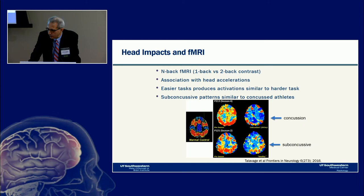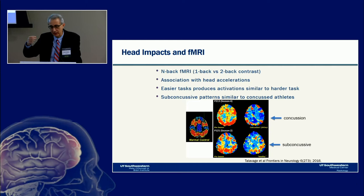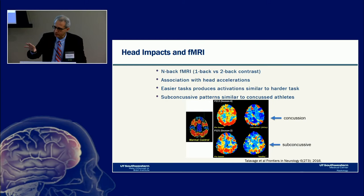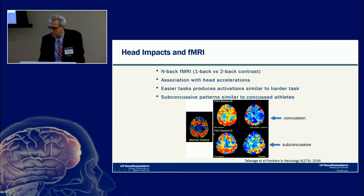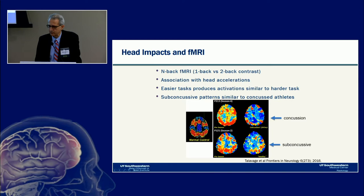A 2016 fMRI study by Talavaj et al. used the N-back task — a memory test where participants recall stimuli from one or two presentations back, getting progressively harder — while performing fMRI. They found an association between N-back performance and head accelerations. Easier tasks produced activations similar to harder tasks. Pre-season fMRI showed normal patterns, but both concussed and subconcussed participants showed decreased fMRI activity post-season, suggesting something is changing inside the brain over the course of the season even without a diagnosed concussion.